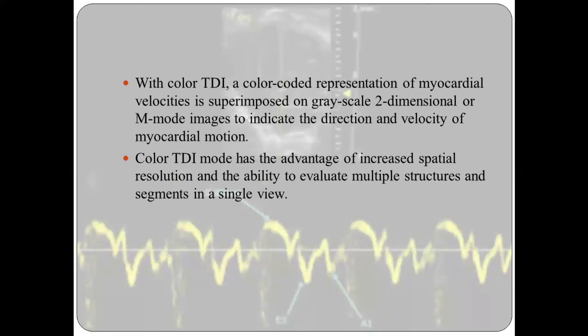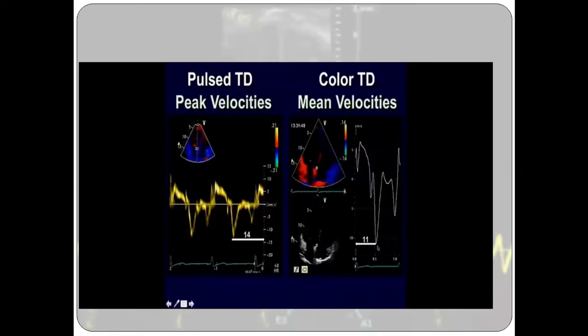Color tissue Doppler imaging is a color-coded representation of myocardial velocities superimposed on grayscale 2D or M-mode images to indicate the direction and velocity of myocardial motion. Color TDI has the advantage of increased spatial resolution and the ability to view multiple structures and segments in a single view. Color tissue Doppler imaging measures the mean velocity whereas pulse wave tissue Doppler imaging measures the peak velocity — there is a difference in the numbers measured between the two.